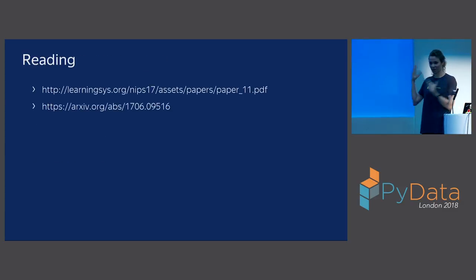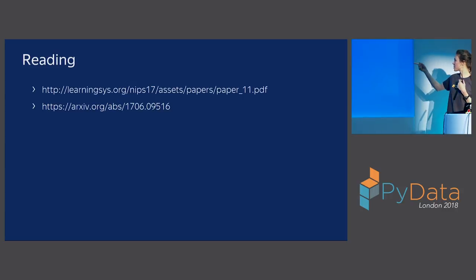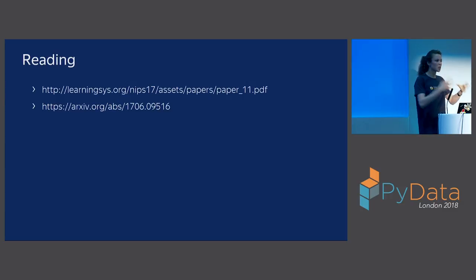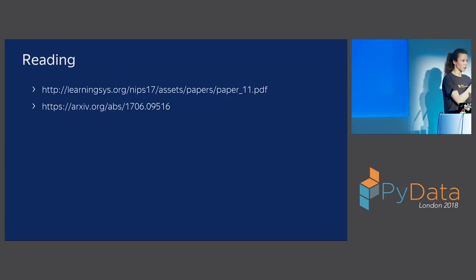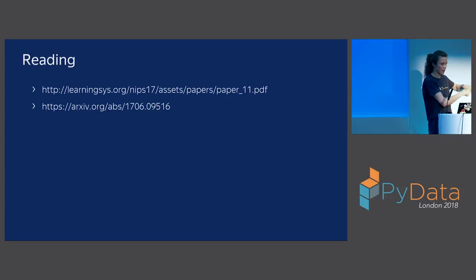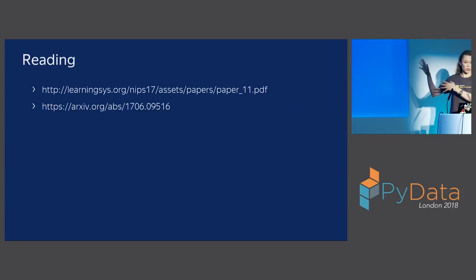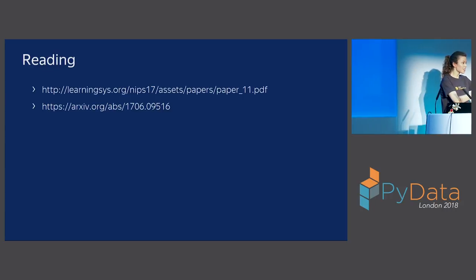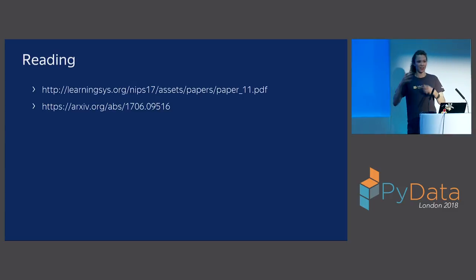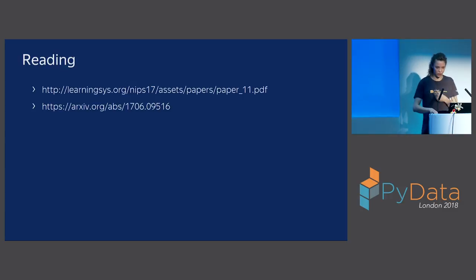We have two papers you can read. One is from the NIPS 2017 Machine Learning Systems workshop — it is very technical and explains how we handle categorical features, GPU training and why our GPU implementation is faster than others (we don't use atomics, while all other libraries do), how we score and calculate model values, and ordered boosting. The second paper is more theoretical and provides the theoretical explanation of why gradient estimates are biased and why ordered boosting makes them unbiased.